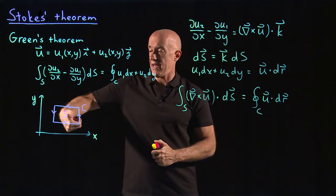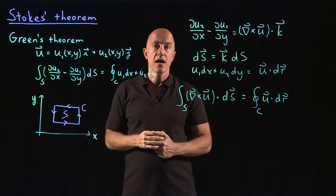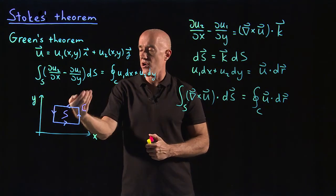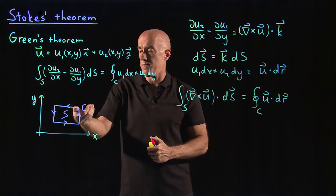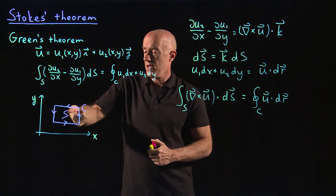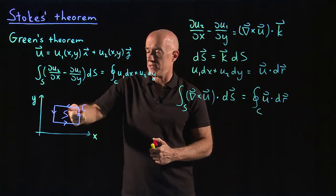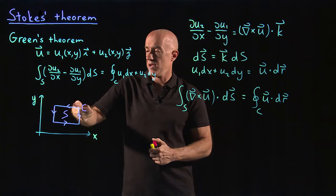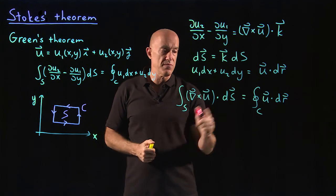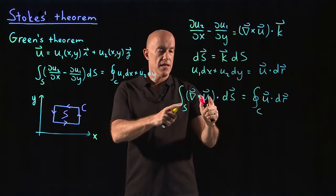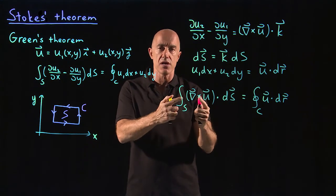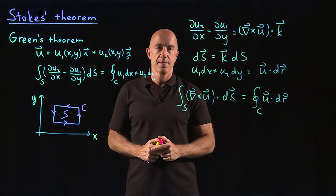That means ds has to be coming out of the screen. Another way of doing this in general: move your fingers along the curve direction, curl your right hand fingers in the direction of the curve, and the normal vector to the surface points in the direction of your thumb. This is very important for getting the signs correct in this expression, and it relates to the definition of the curl in terms of the right hand rule.